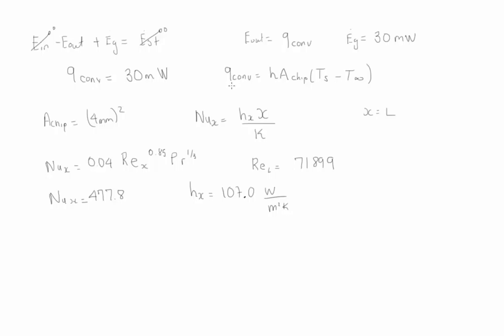Since we know the amount of heat lost by convection, the convection coefficient, the area, and T infinity, we can find that the surface temperature at that particular chip is 42.5 Celsius.